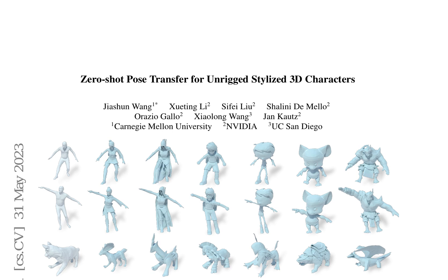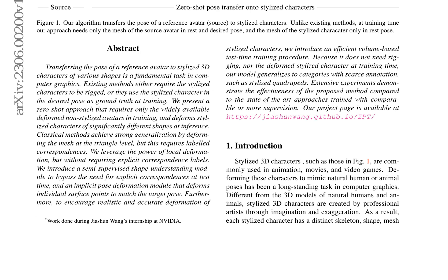It utilizes a correspondence-aware shape understanding module to predict part segmentation labels and represent the shape of a 3D character as a latent shape code. An implicit pose deformation module then deforms individual surface points guided by a target pose code sampled from a prior pose latent space.